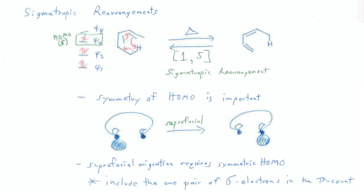Figuring out which sigma bond is going to be involved in the reaction can be a bit of a challenge. We sometimes think of conjugation as an alternating pattern of double and single bonds, and while that's not totally true, it is convenient to think about it that way sometimes. If you look at any given single bond and imagine that it is, in fact, a double bond, and if that fake double bond would extend the conjugation of an existing pi chain, then that single bond could be involved in a sigmatropic rearrangement. So let's take a look at an example.